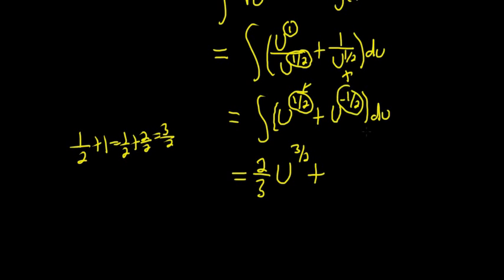then we do the same thing here. We add 1. So we get u to the 1 half. And then when we divide by 1 half, we really multiply by the reciprocal. So 2 over 1 plus c.